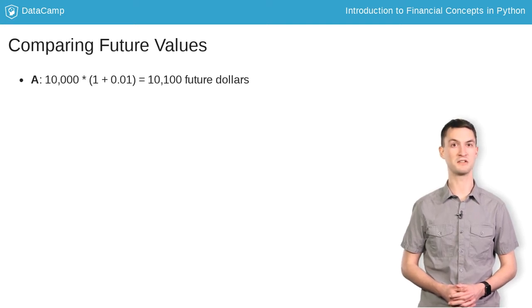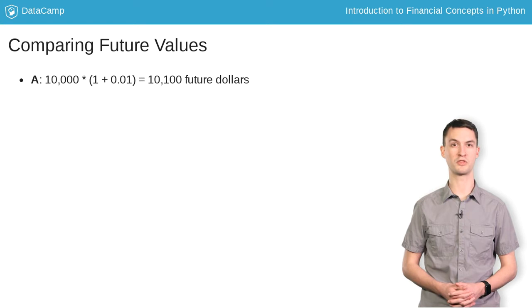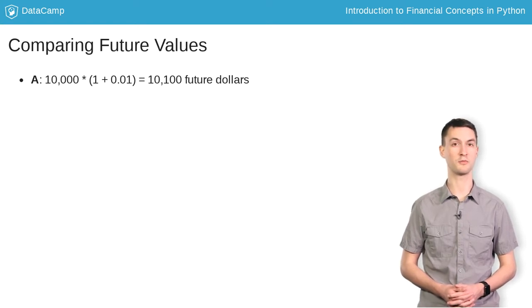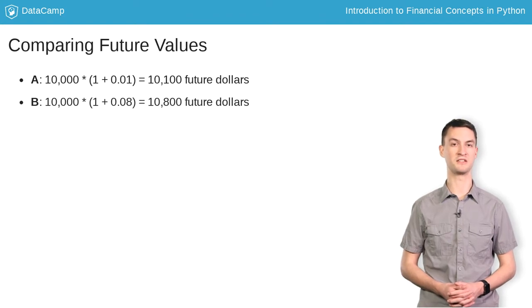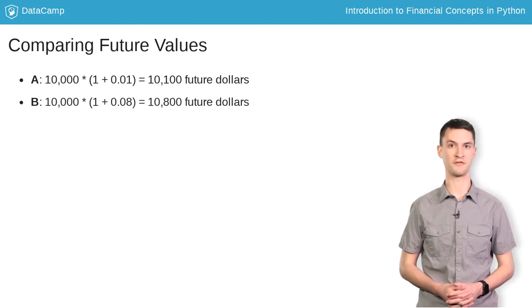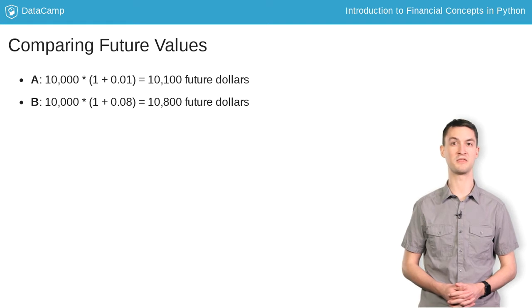Putting $10,000 present dollars into the bank will allow you to withdraw $10,100 future dollars one year from now. Option B is the best scenario, resulting in $10,800 future dollars on average after one year by investing $10,000 present dollars.